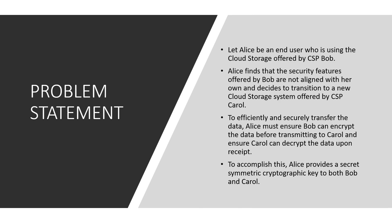The problem statement, with an example: let Alice be an end user who is using the cloud storage offered by provider Bob. Alice finds that the security features offered by Bob are not aligned with her requirements. So what should we do? We should secure it on our end. To efficiently and securely transfer the data, Alice, who owns the data, must ensure that Bob can encrypt the data before transmitting to Carol, a third party, and ensure Carol can encrypt the data upon receipt. To accomplish this, Alice provides a secret symmetric cryptographic key to both Bob, the provider, and Carol, the third party.